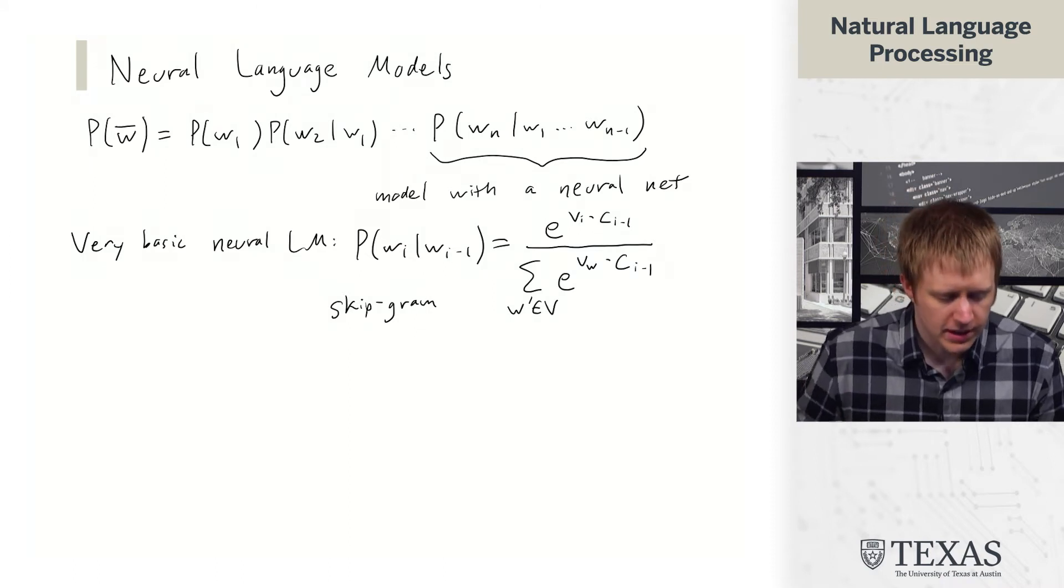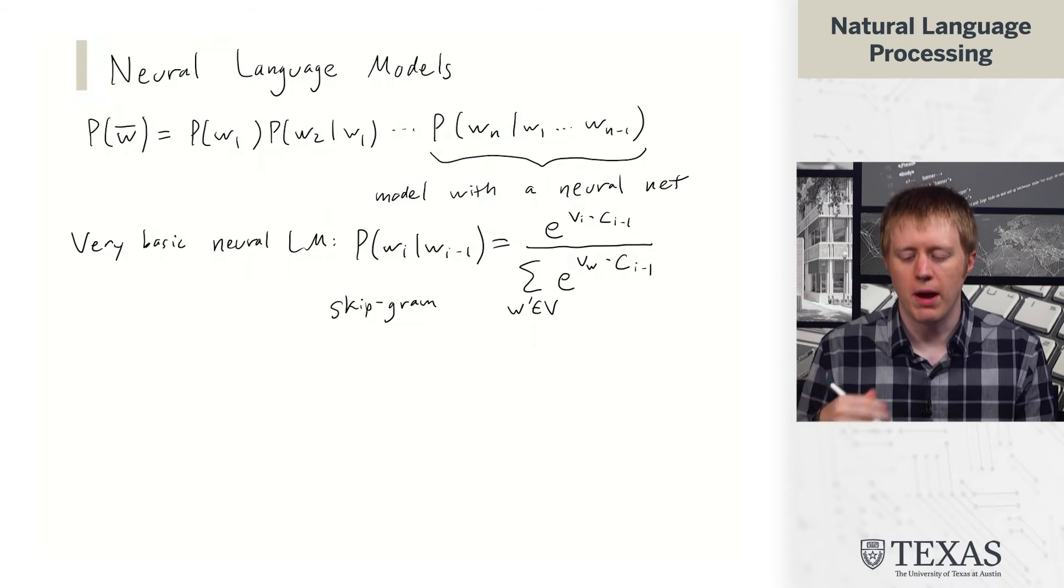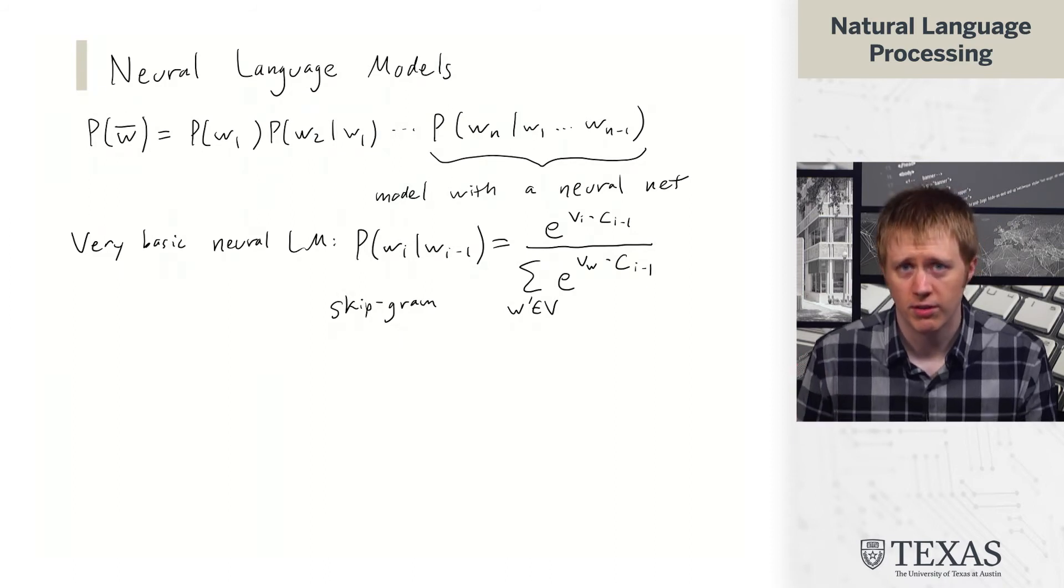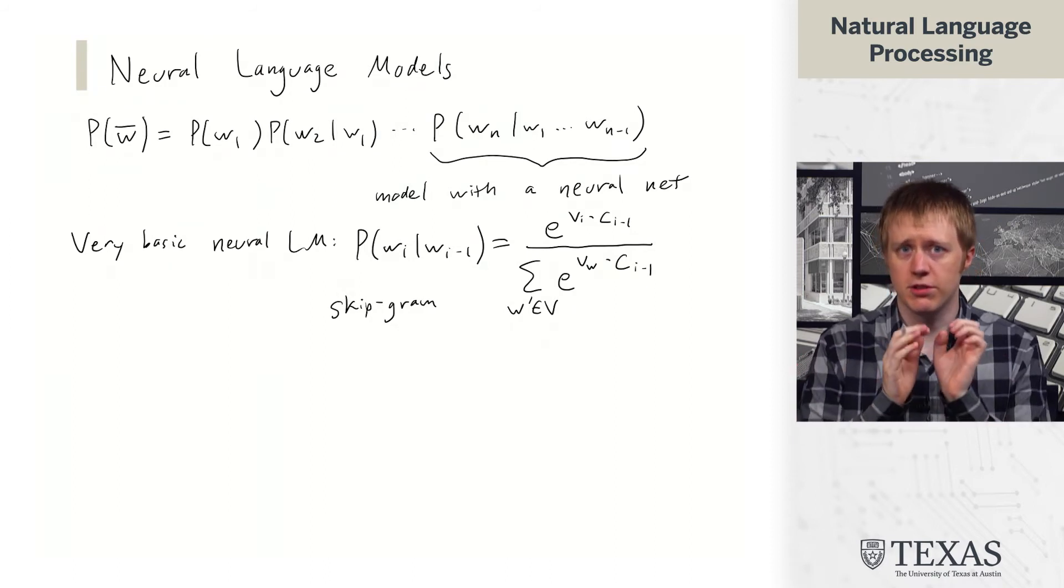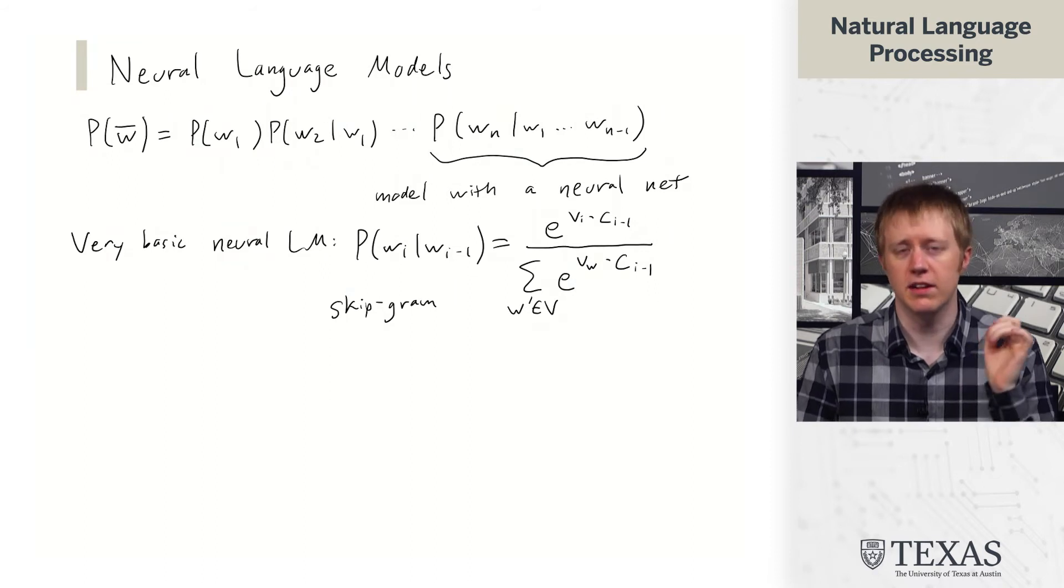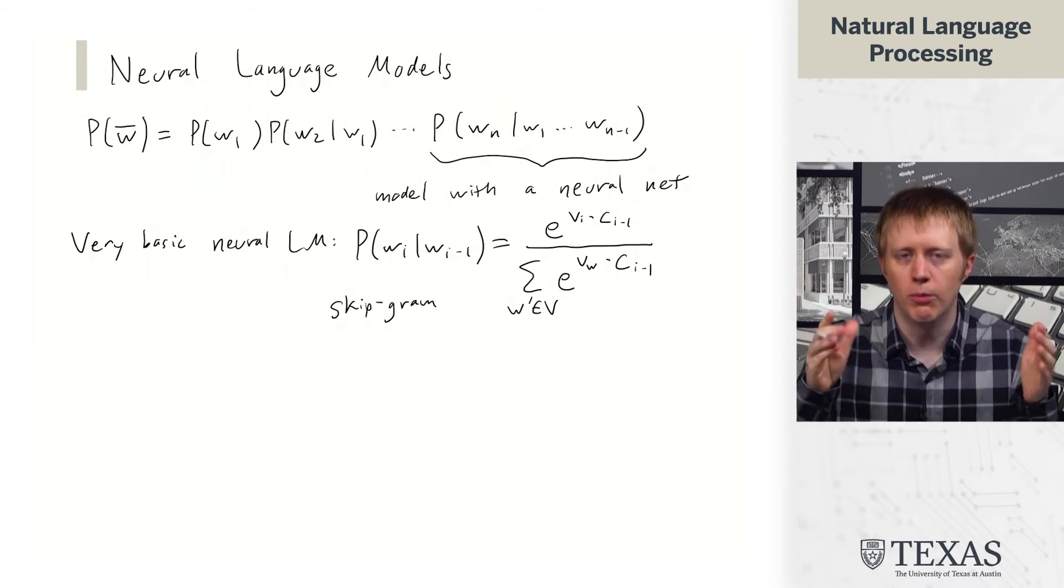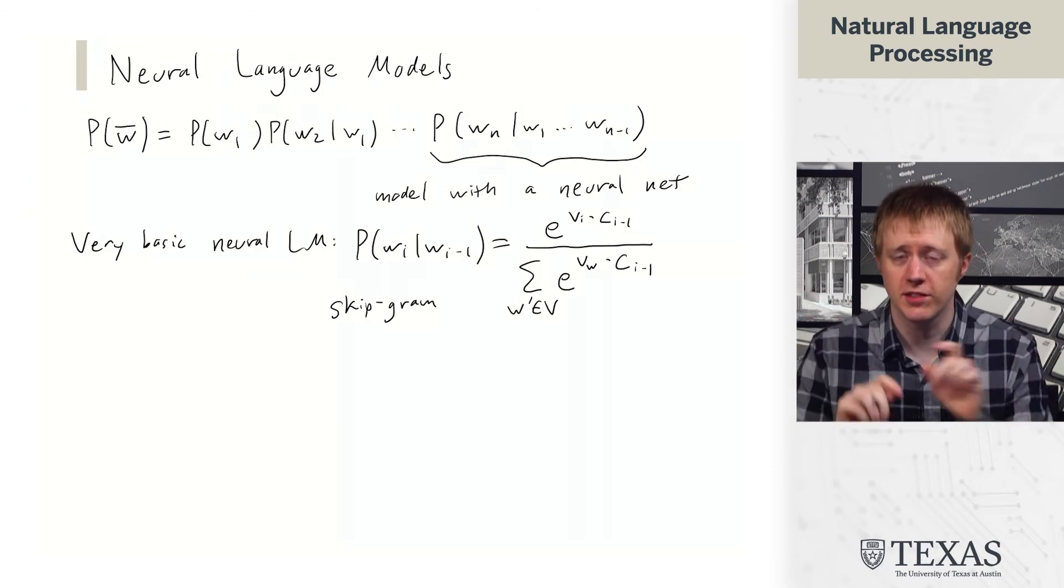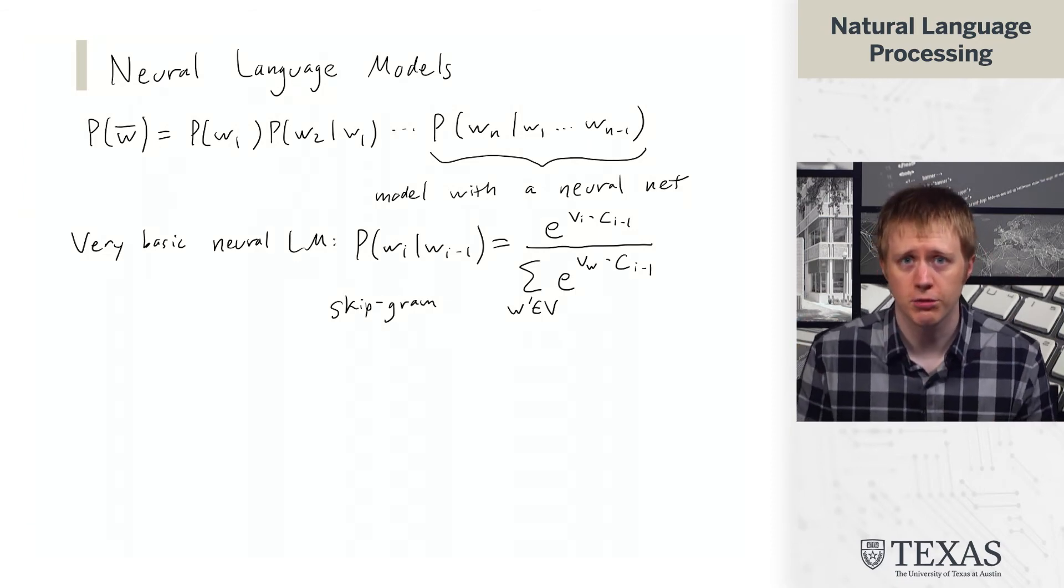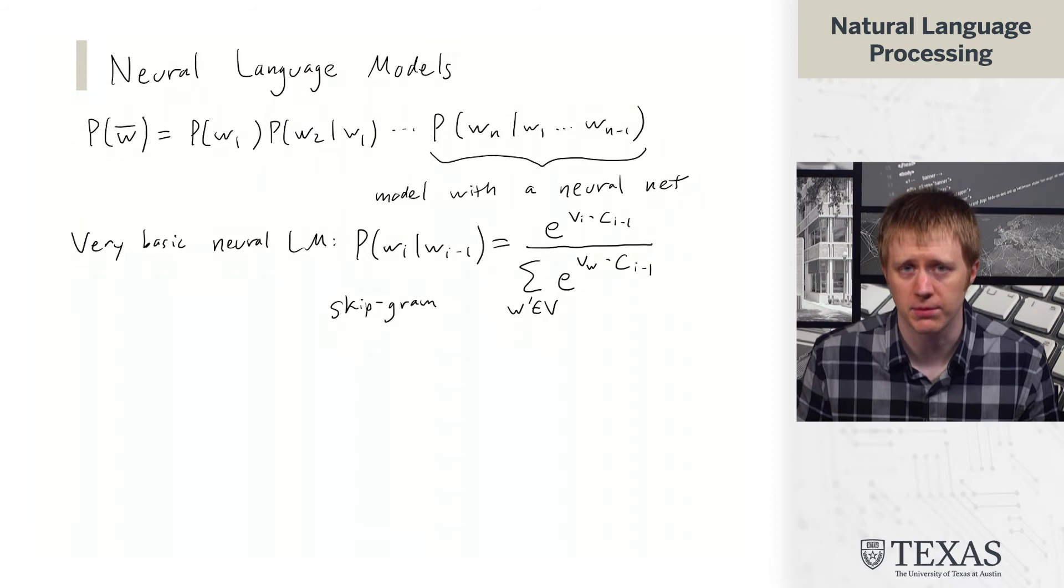So this kind of gives you an idea of the way we might approach this. So skip-gram obviously only uses one word of context. And in general, skip-gram is about modeling words that are possibly larger distances away or both sides. So this would be a specialization of skip-gram to this particular setting.